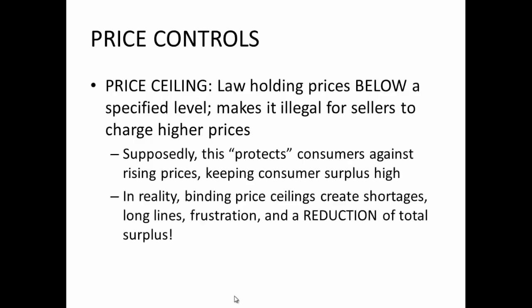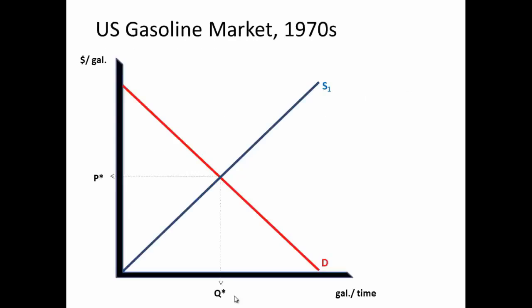An infamous example of price ceilings in action was the price controls on gasoline in the U.S. in the 1970s. For most of this decade, actual equilibrium market prices of gas in the U.S. bounced around below the ceiling level, so the price control did not matter. But there were a few occasions during which market forces wanted to push the price above the ceiling level, but couldn't. As we say in econ jargon, the ceiling became binding.